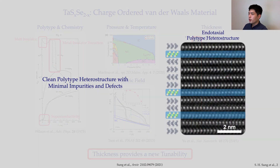We will show that we can re-engineer the 2D regime by synthesizing a novel, clean polytype heterostructure with minimal impurities and defects.